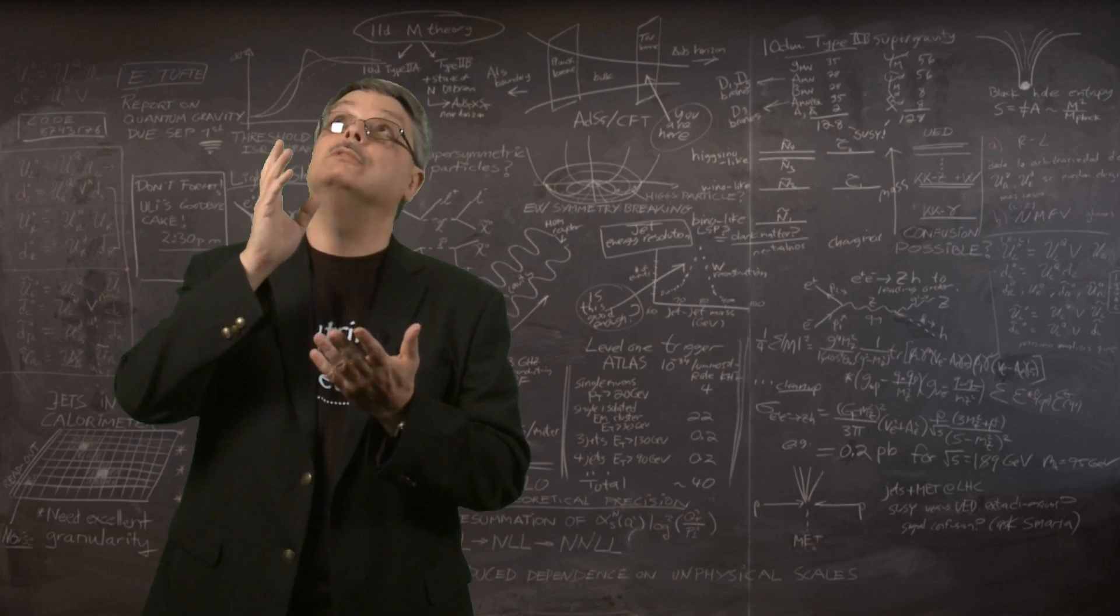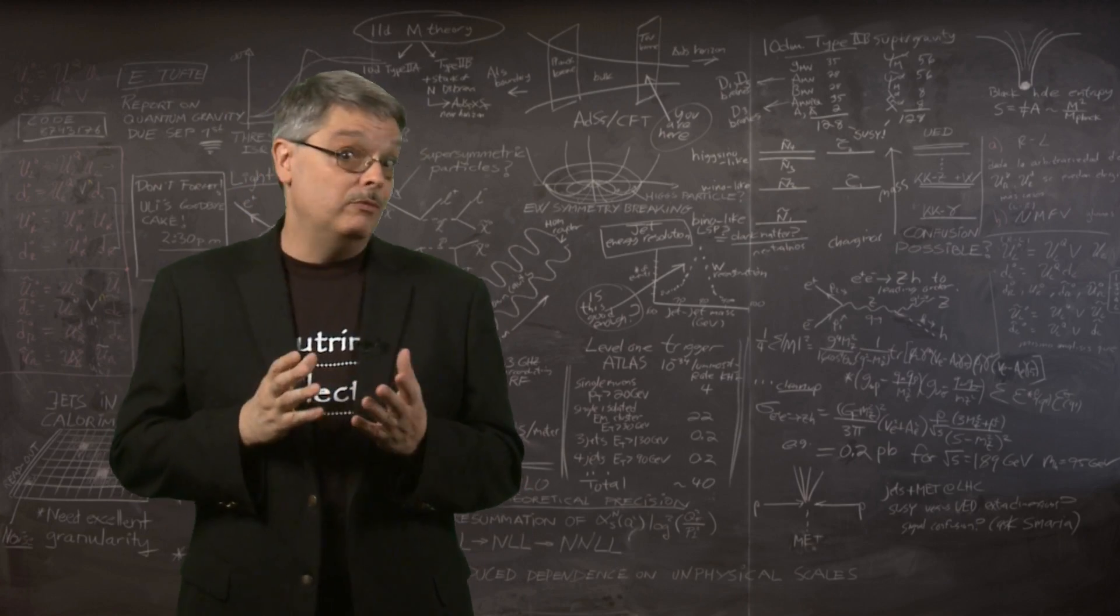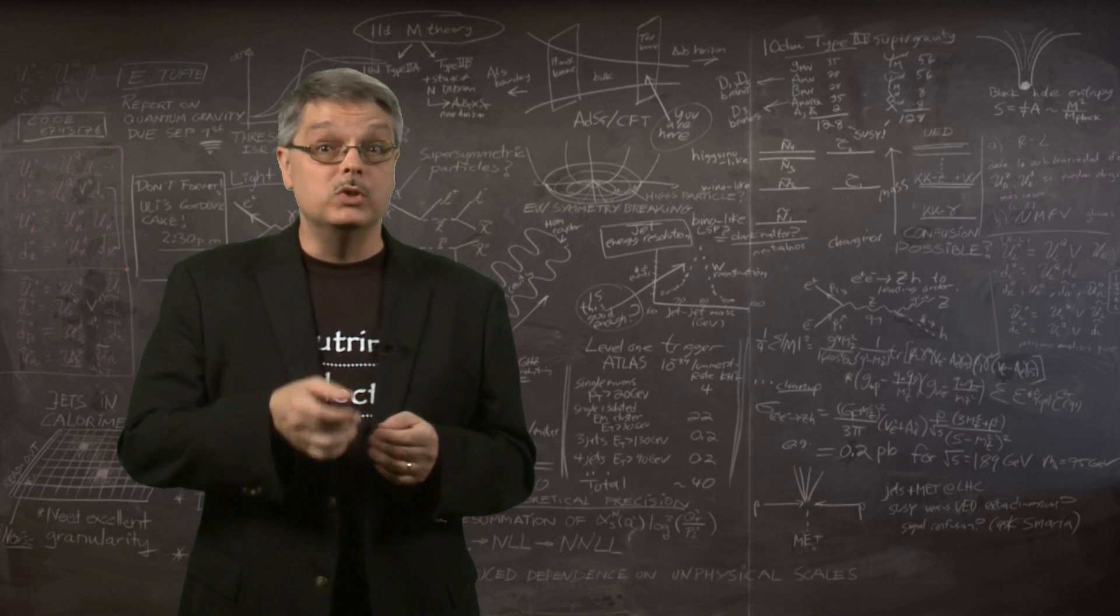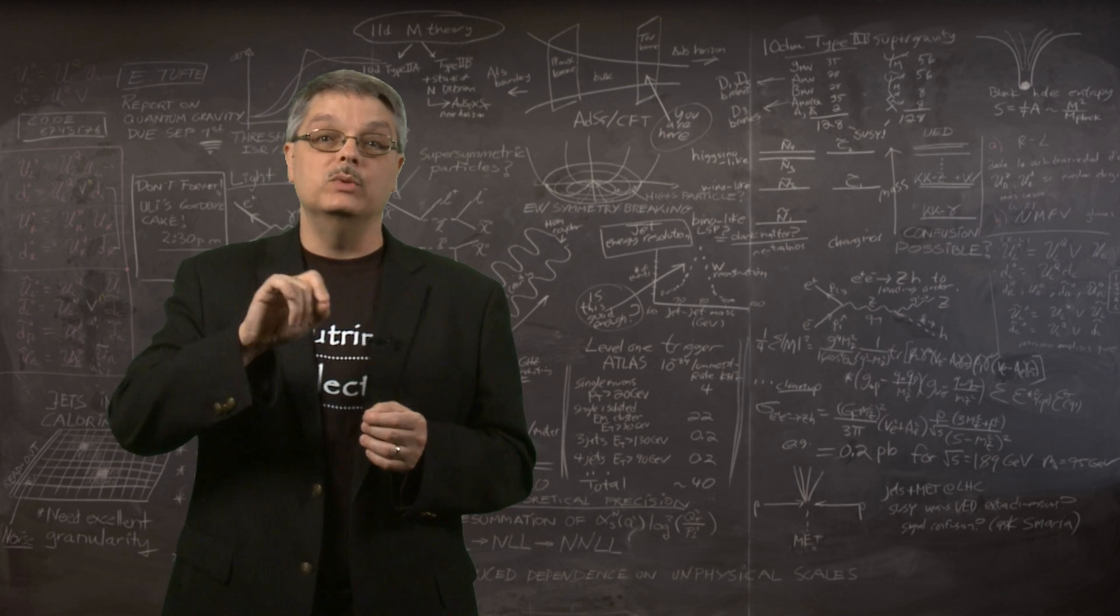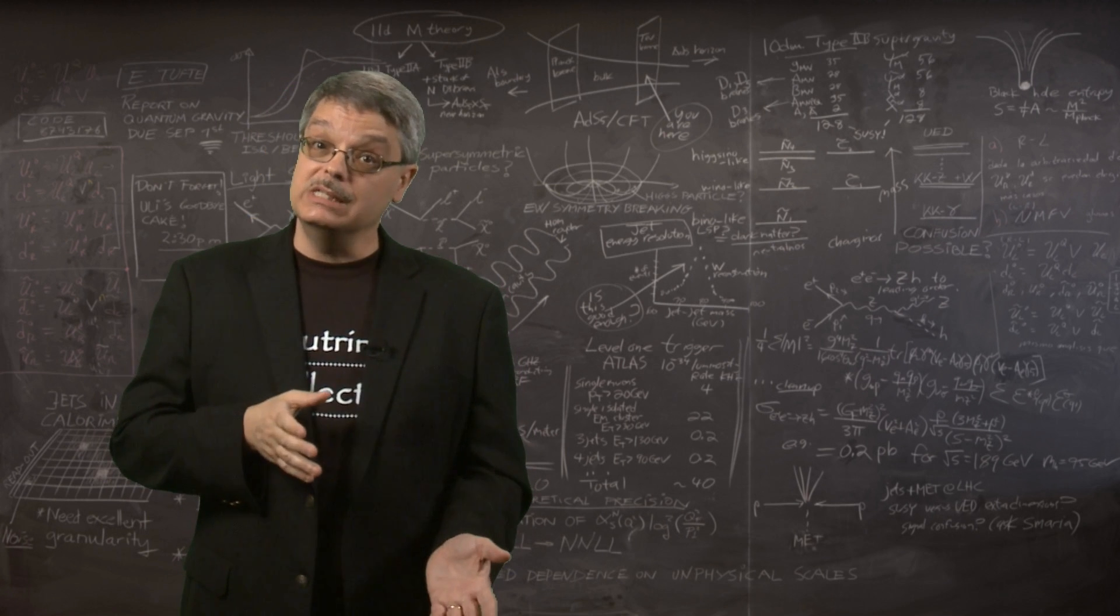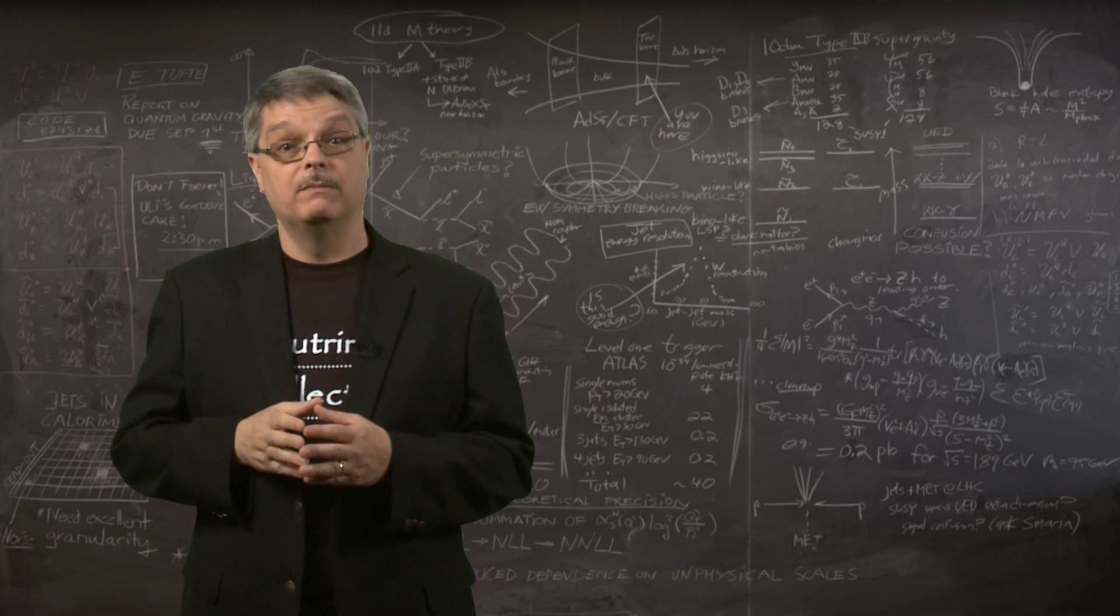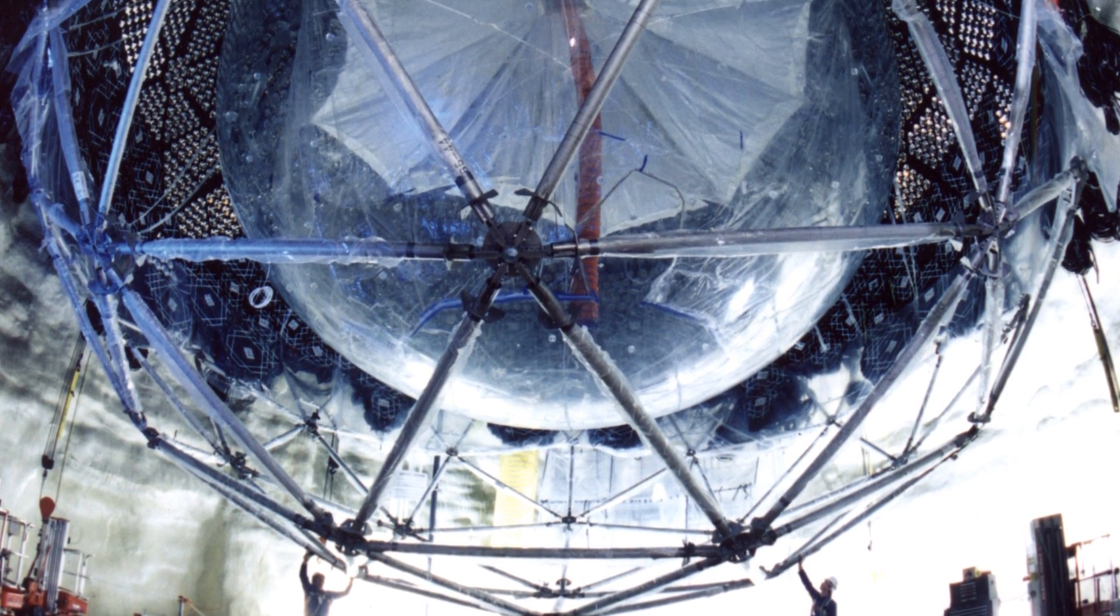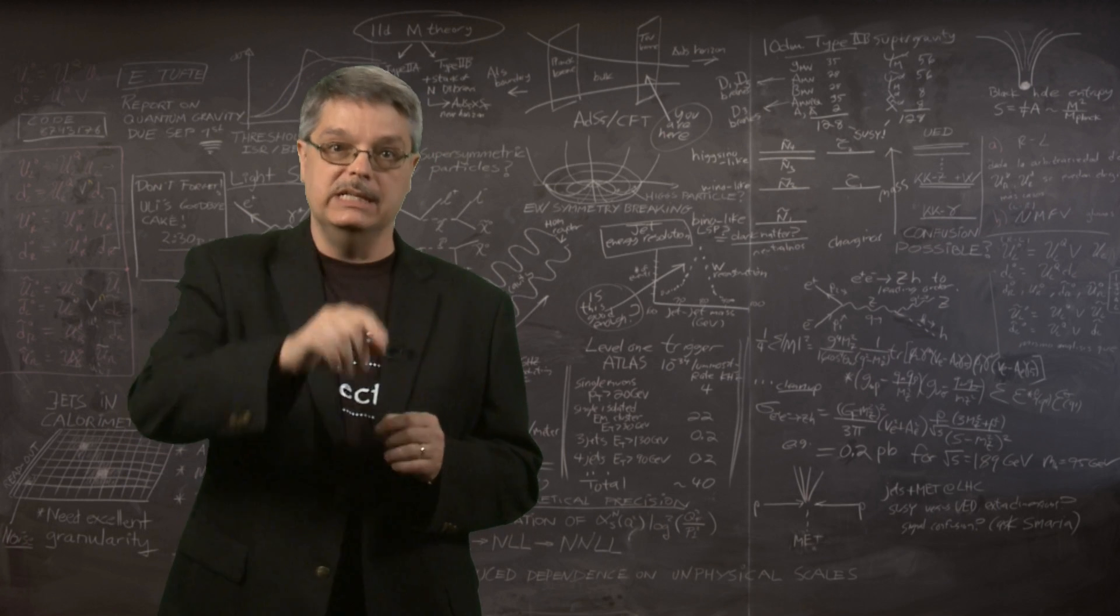By separating out neutrinos created in the atmosphere directly above, which was about 12 miles away, from neutrinos created on the other side of the Earth, which was about 8,000 miles away, they proved that it was the neutrinos that traveled a large distance that had changed their identity most. The SNO experiment in a mine deep under Sudbury, Ontario clinched it. Neutrinos were changing their identity.